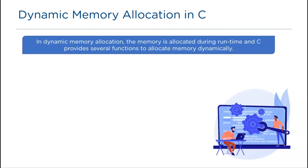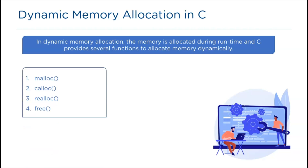To allocate memory dynamically, C provides a set of functions: malloc, calloc, realloc, and free. These functions are defined in stdlib.h, the standard library header file. Let's look at the syntax and examples of these functions.